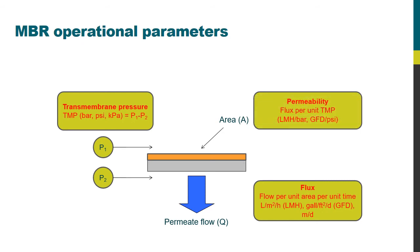Now the ratio of the flux to the trans membrane pressure is referred to as the permeability, which is the flux per unit TMP. So that will then take units of LMH per bar or in US units, GFD per PSI.